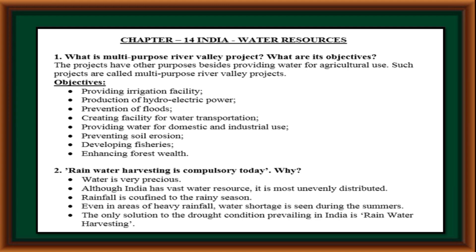Objectives of multipurpose river valley projects: providing irrigation facilities, production of hydroelectric power, prevention of floods, creating facilities for water transportation, providing water for domestic and industrial use, preventing soil erosion, developing fisheries, and enhancing forest wealth.